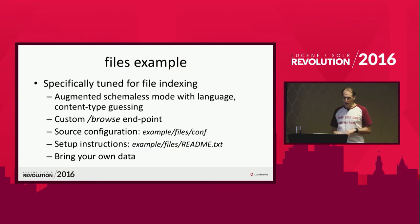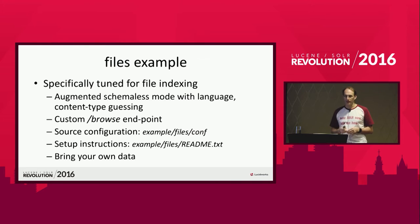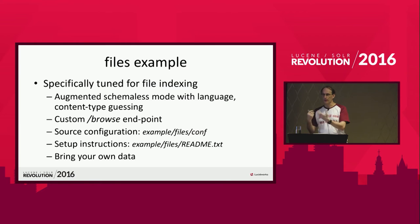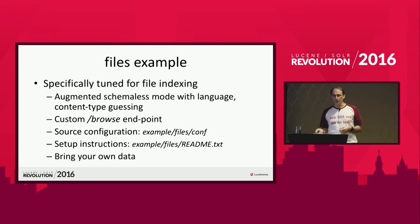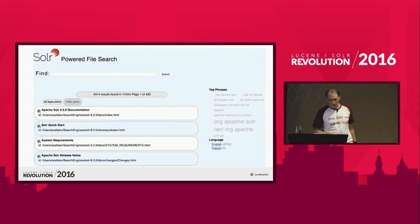The Files example is specifically tuned for file indexing and demonstrating rich text processing features — extracting content and so on. It uses augmented schemaless mode and does language detection, content type guessing, and a bunch of other things. It has a custom /browse endpoint, configured differently from what you may have seen in previous Solr versions. The source configuration is under the example directory, not under the server directory, which is why it's a bit hidden. It comes with a README file that explains everything, and you can bring your own data.